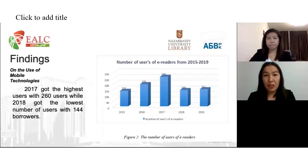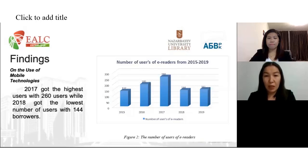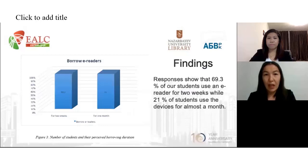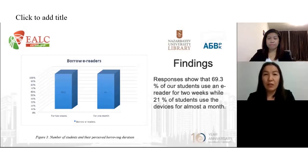The library also studied students' mobile access demands and awareness. Taking into account the survey results, the library will have an idea on developing more mobile library services in response to the needs of students. The research also checked the number of e-reader users for the past five years. 2017 got the highest number of users with 217, while 2018 got the lowest with 144 borrowers. Students were also asked about the borrowing duration of handheld devices. Results show that 69.3% of students use e-readers for two weeks, while 21% use the devices for almost a month.